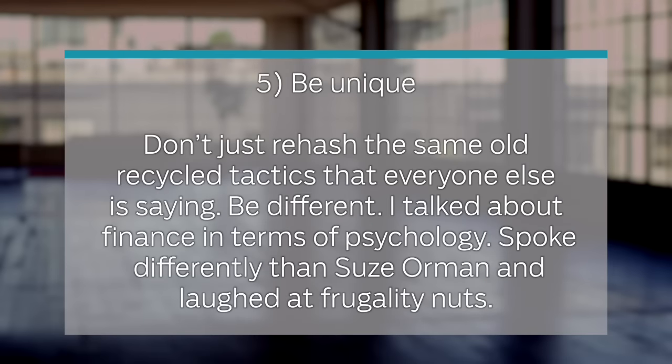Number five, be unique. Don't just rehash the same old recycled tactics that everyone else is saying. Be different. For example, I talked about personal finance in terms of psychology, and I actually made fun of frugality zealots who said you can't spend money on lattes or anything — I had a totally different approach. If you don't have something new to add to the conversation, then what are you doing? I believe all of us have something new to add. It could be an extreme level of practicality, like going through and testing 25 cookbooks and sharing what you learned. Or it could be someone new going through the process of a new skill — learning how to swim and taking readers through every single day. There are a million ways to do it. But if it's just rehashing the same old stuff, you're sunk.